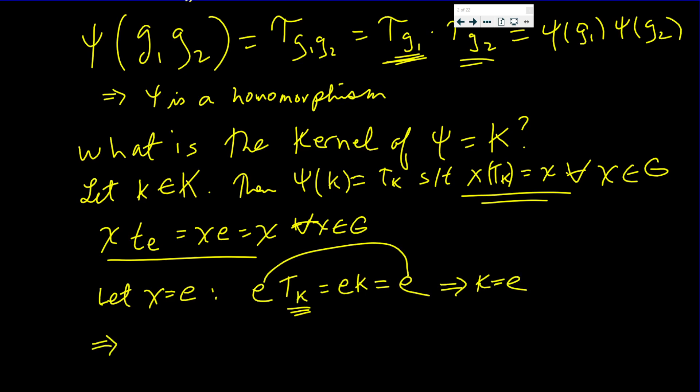That implies that the kernel is just τ_e which is the identity. If the only element in the kernel is the identity, then we can go from a homomorphism between these two sets to those sets being congruent.